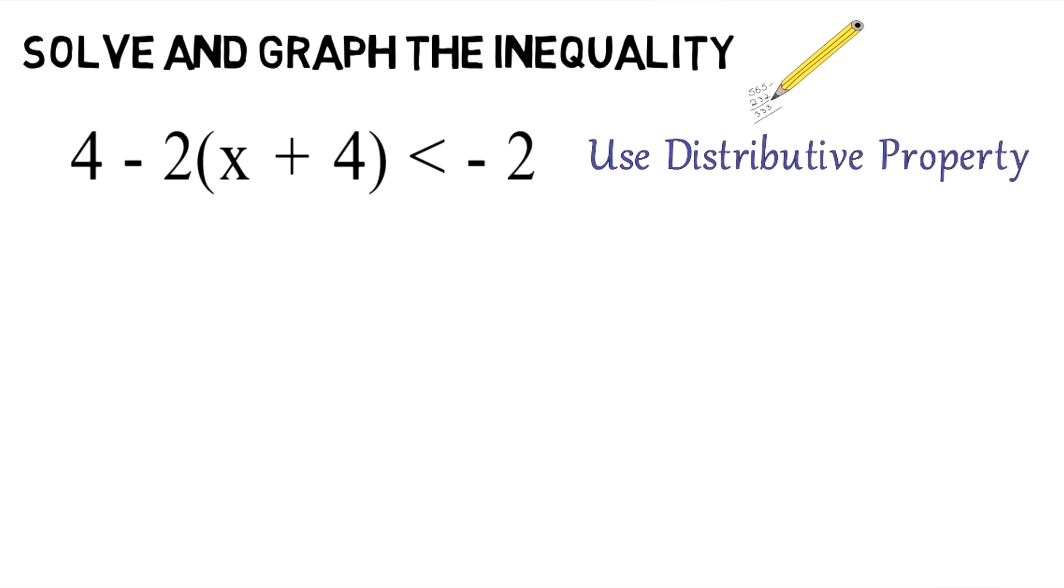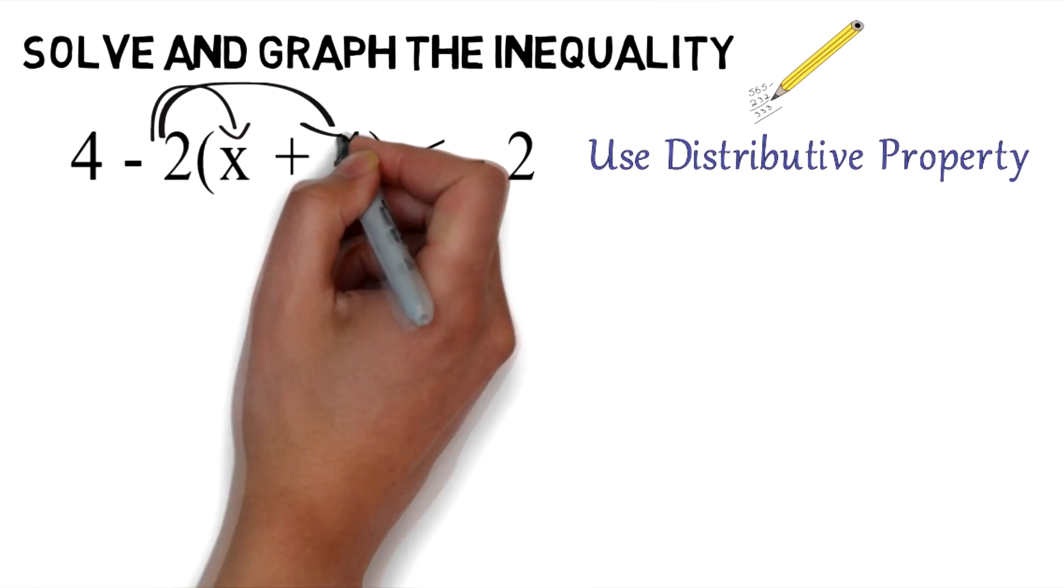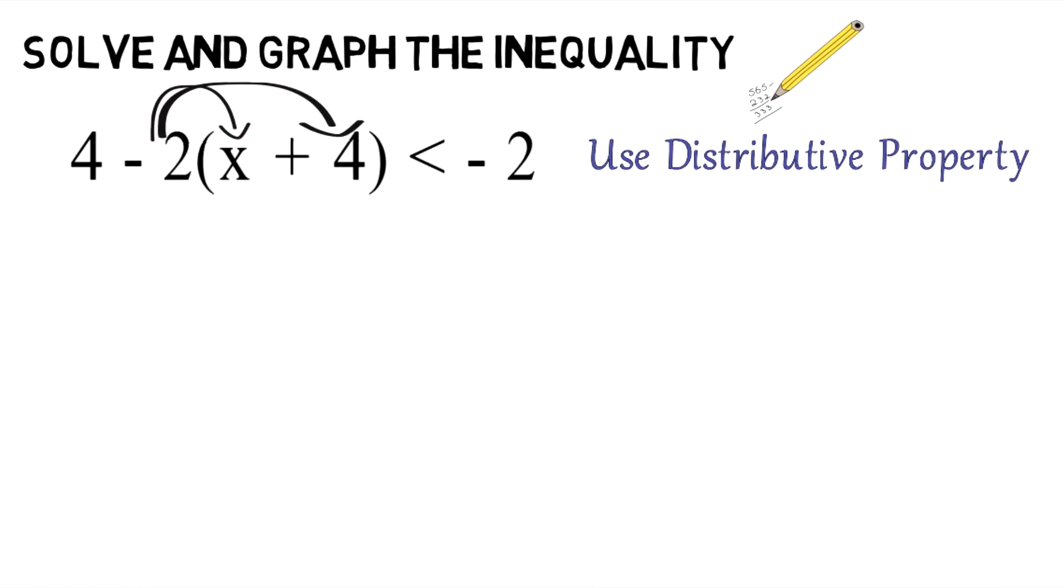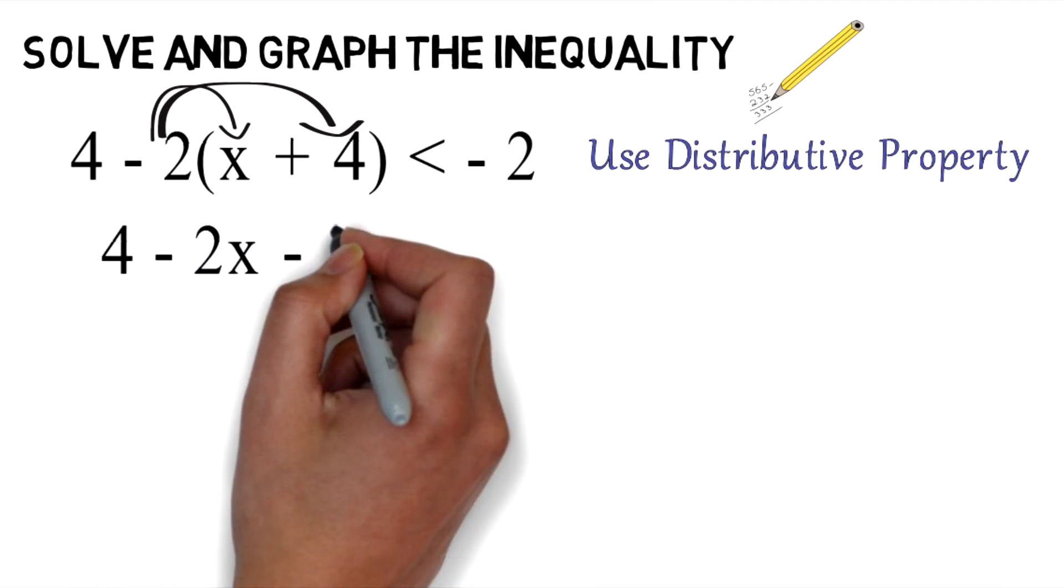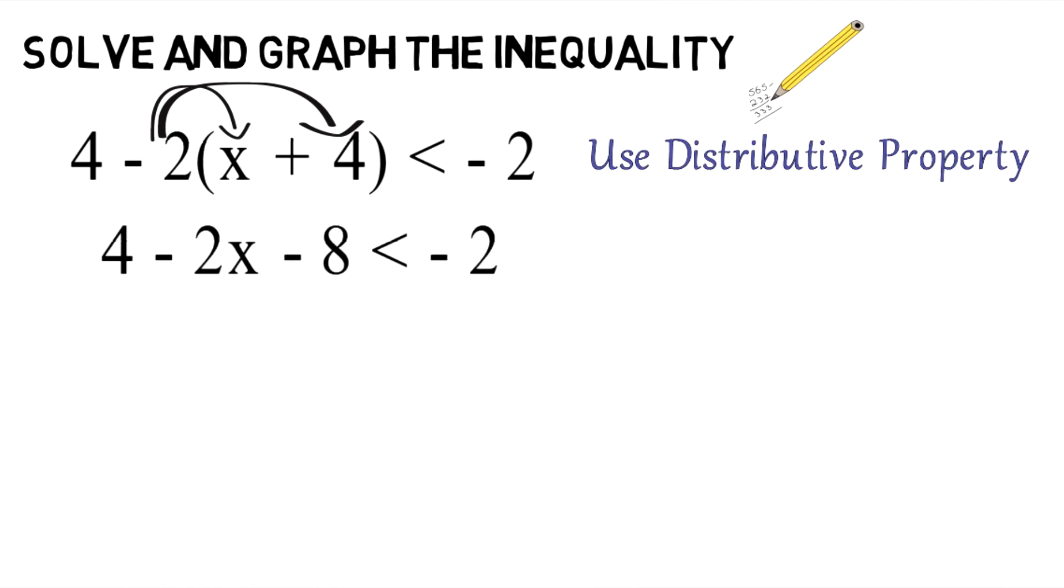One of the things you should be doing first is using the distributive property. In that case, you're going to take negative 2 and multiply it by x, and then take negative 2 and multiply it by 4. You wind up with 4 minus 2x minus 8 is less than negative 2.